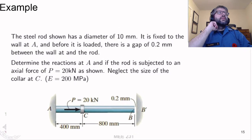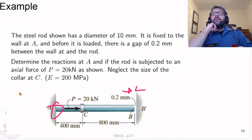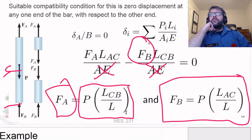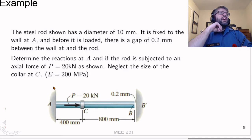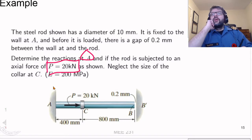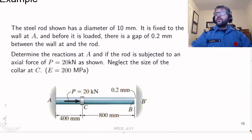Now let's show another example. We have a steel rod with a diameter of 10 millimeters, fixed to the wall at A. It has a gap of 0.2 millimeters before it contacts the wall at B. There's a collar at C where the load is applied. We want to find the reaction at A if the rod is subjected to an axial force of 20 kilonewtons, ignoring the size of the collar.